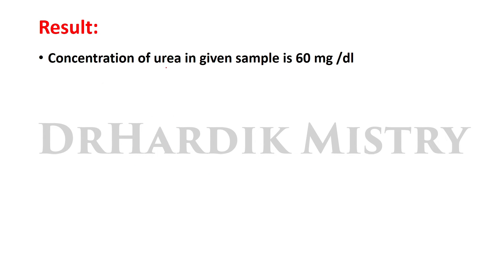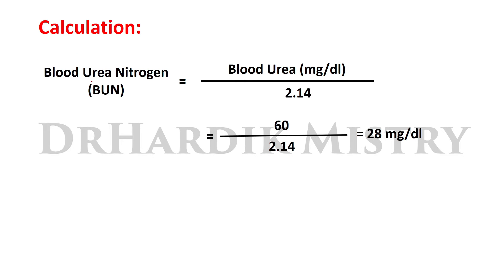The concentration of urea in the given sample is 60 mg per dL. Blood urea nitrogen (BUN) can be calculated as: blood urea (mg/dL) ÷ 2.14. So BUN = 60 ÷ 2.14 = 28 mg per dL.